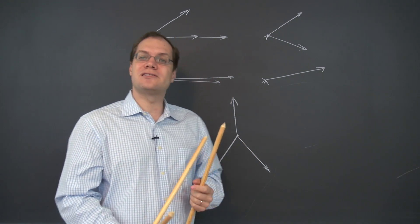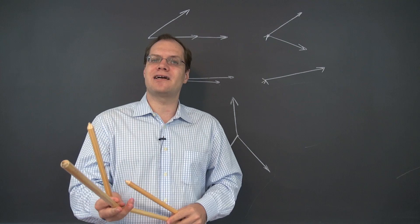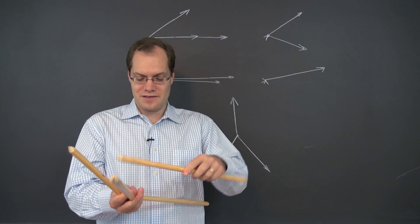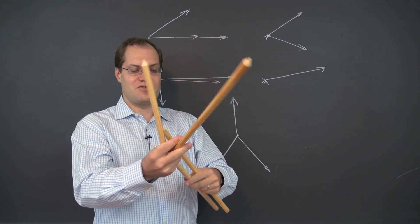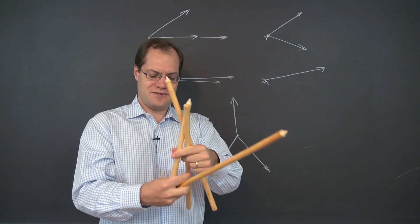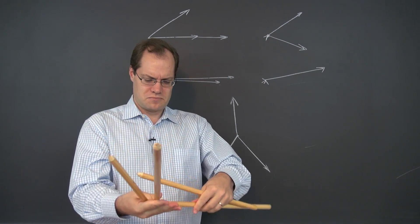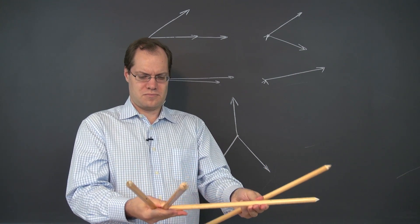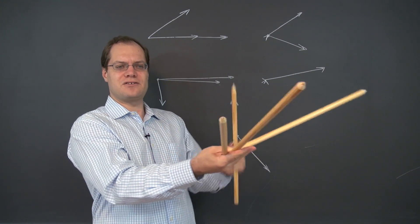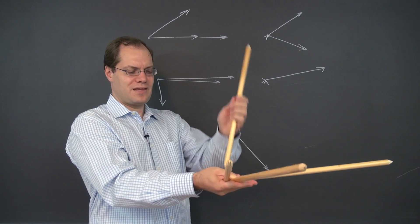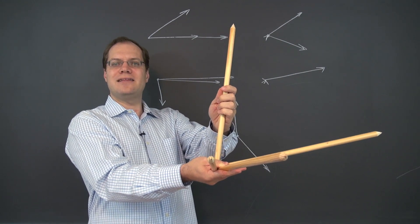Or it could be of this variety, where some of the vectors can be expressed as linear combinations of others, but not all of them. For example, if you have three vectors in the same plane and then another vector not in that plane.